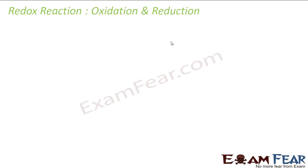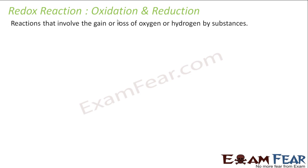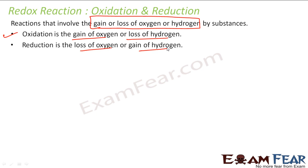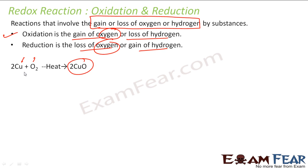Now we will understand redox reactions — oxidation and reduction reactions. A reaction involving gain or loss of oxygen or hydrogen is called a redox reaction. Gaining oxygen or losing hydrogen is oxidation. For example, when copper is heated in the presence of oxygen, it becomes CuO — copper is gaining oxygen, so copper is oxidized.